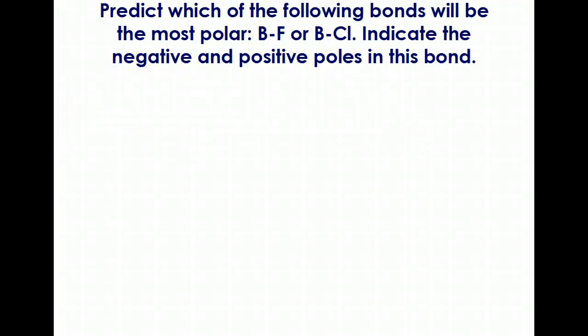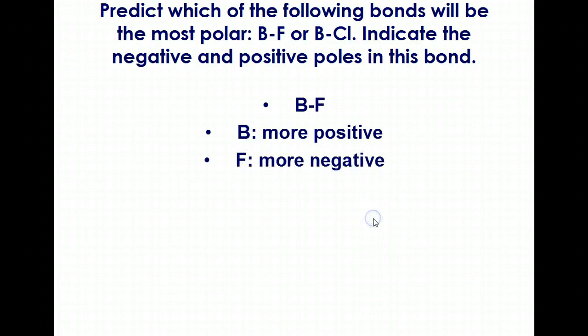Our next question asks us to look at which of these bonds will be more polar, BF or BCl. Boron's electronegativity value will be the same in both bonds, but fluorine is going to be slightly higher than chlorine. Fluorine has an electronegativity value of 4, with chlorine at 3.5, so when we take the difference between fluorine and boron versus chlorine and boron, BF will be the more polar bond. In terms of the negative and positive poles in this molecule, we would see the partial negative be on fluorine, whereas boron would have a more positive charge. We would see an arrow being drawn from boron to fluorine, showing the more electronegative end of the molecule on the fluorine side.